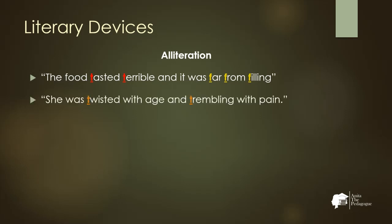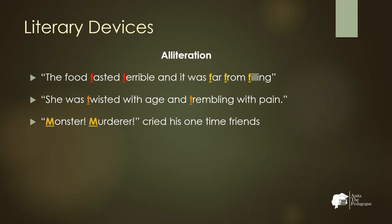Another example of alliteration: 'She was twisted with age and trembling with pain' — the initial consonant 't' is repeated. Also: 'Monster! Medra cried his one-time friends' — demonstrating the repetition of the 'm' sound.